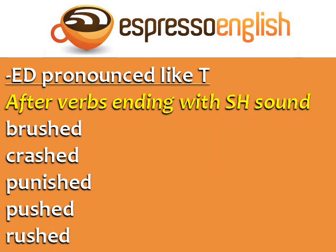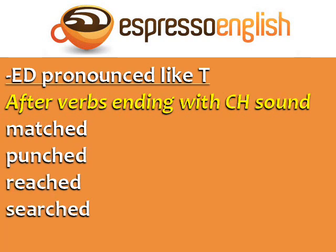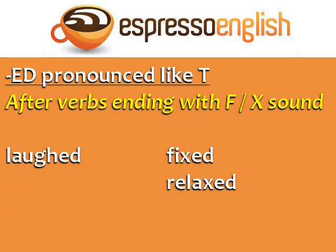ED is pronounced like T after verbs ending with an SH sound, and after verbs ending with a CH sound. Finally, ED is pronounced like T after verbs ending with an F or an X sound.